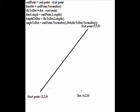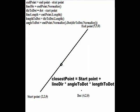If none of those cases matches, then the closest point is the start position of the line, plus the line direction, multiplied with the angle to the dot, multiplied with the distance to the dot.